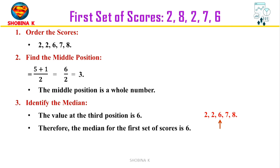Next, we need to identify the median by checking if the middle position is a whole number. In this case it is. Since the middle position is a whole number, go to that position in the ordered list and pick that value. The value at position 3 in the ordered list is 6, therefore the median is 6.